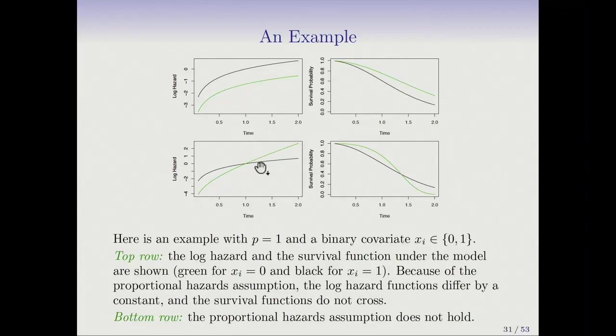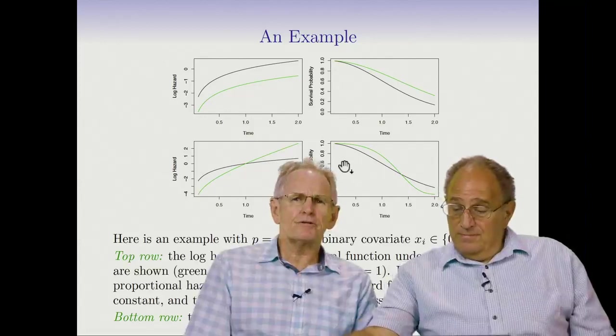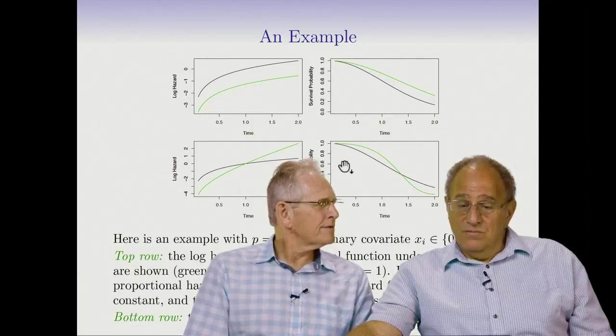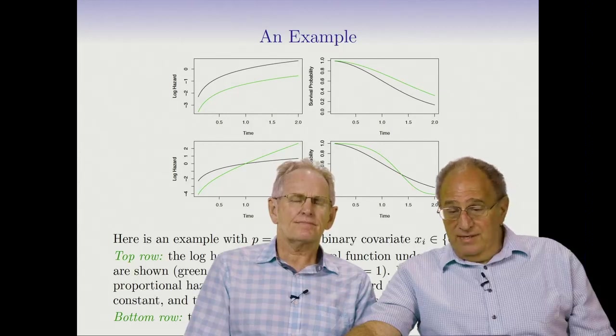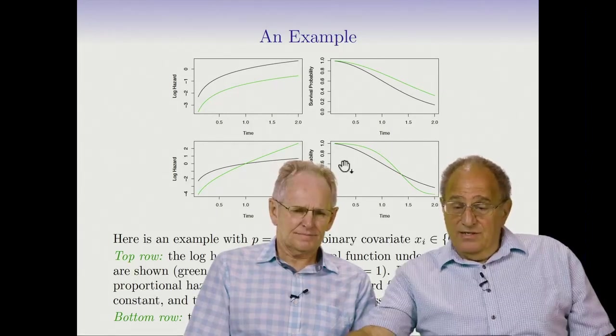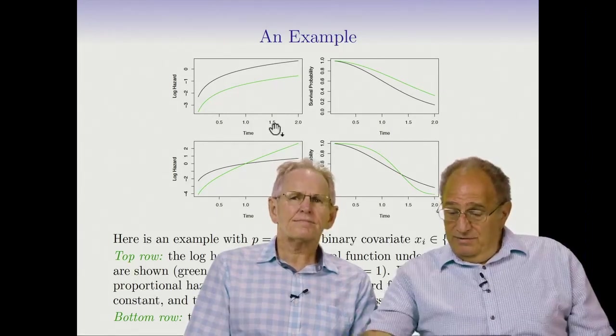On the other hand, if we had a situation like this where the hazards cross, this group's doing better for a while and then worse later, then the survival curves also cross. And this is a non-proportional hazard situation. So, proportional hazards model, without modification, can't really capture this situation. So it's a convenient assumption, which is often reasonable. And there are ways to check it. We just talk in the book a bit about that and with references. But it's a good starting model. It's often very, very effective.